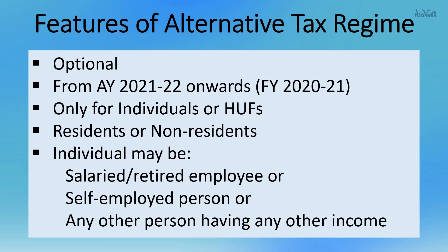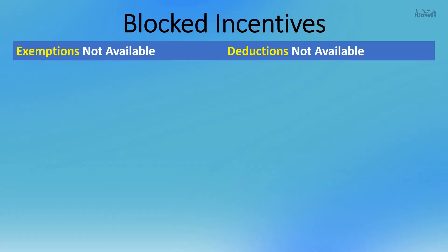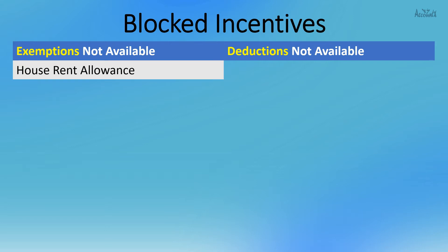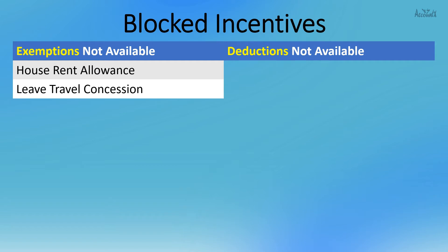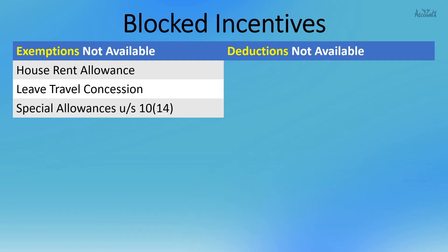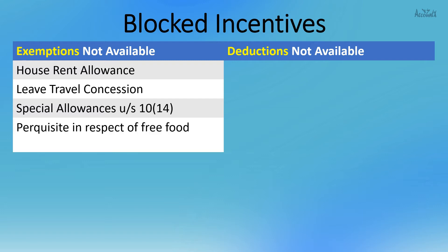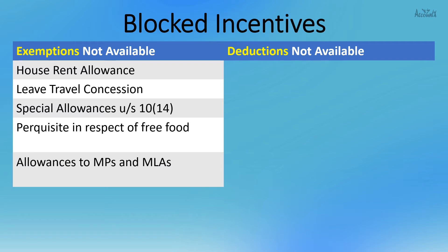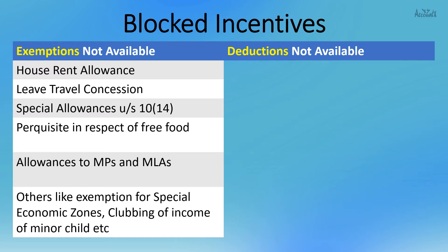Under the normal tax regime, we can avail certain exemptions and deductions. Under the alternative tax regime, certain exemptions and deductions are not available. Blocked exemptions include: house rent allowance, leave travel concession, certain special allowances under Section 10(14), perquisites in respect of free food provided by the employer, certain allowances to MPs and MLAs, and exemptions for special economic zones and clubbing of income of minor children.